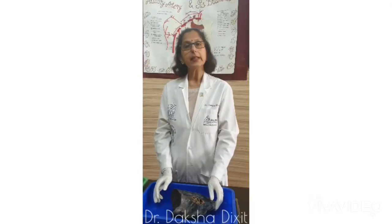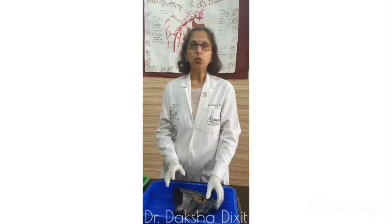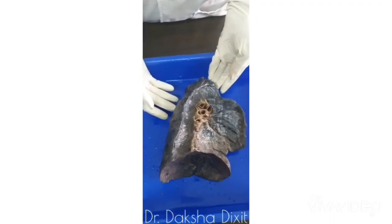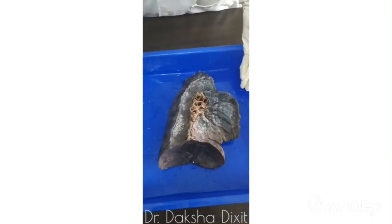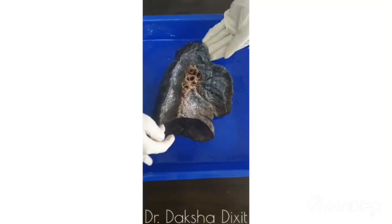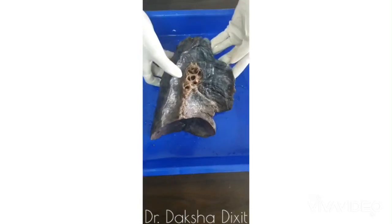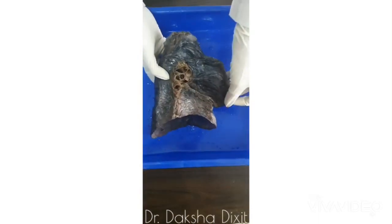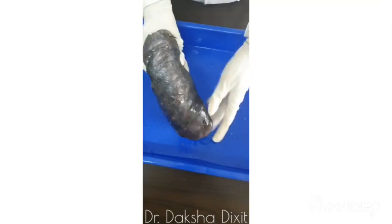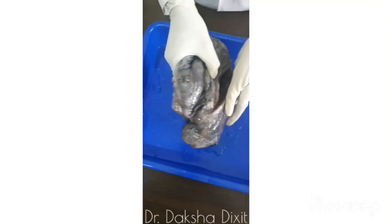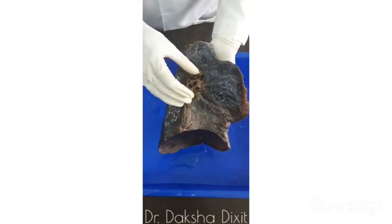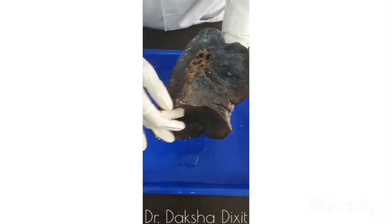Hello friends, today we will be studying the demonstration of the lung tissue, particularly the left lung. Here is the lung tissue. In order to identify the side, we need to know the morphological features. On top is the apex, this is the inferior or diaphragmatic surface, this is the sharp anterior border, this is the sharp inferior border, and this rounded one is the posterior border. This is the medial surface which has the hilum.